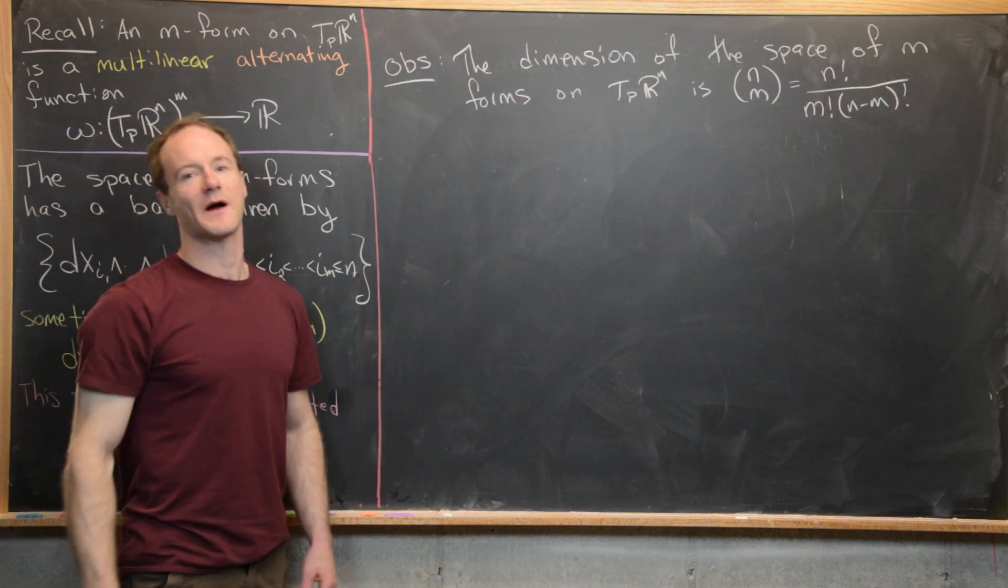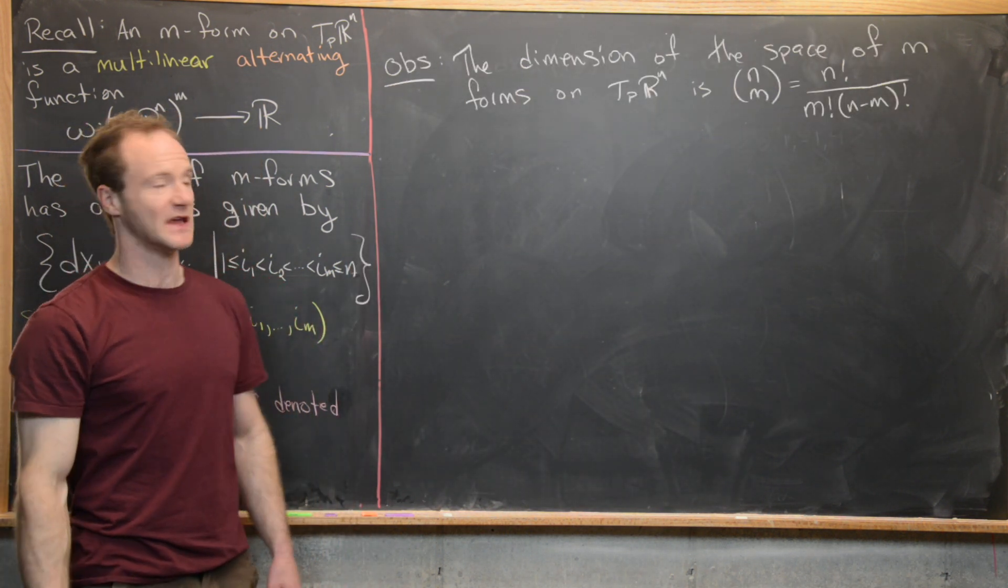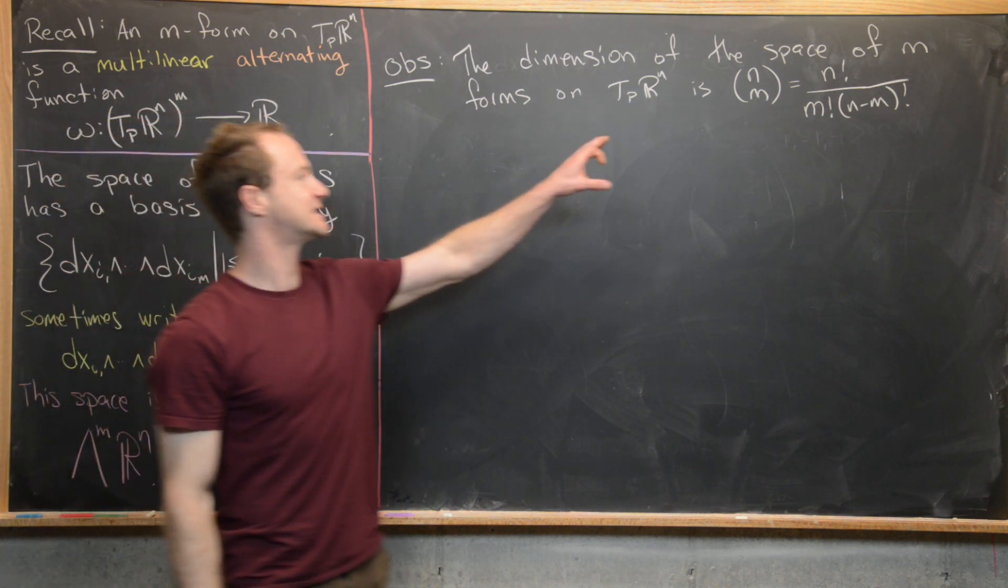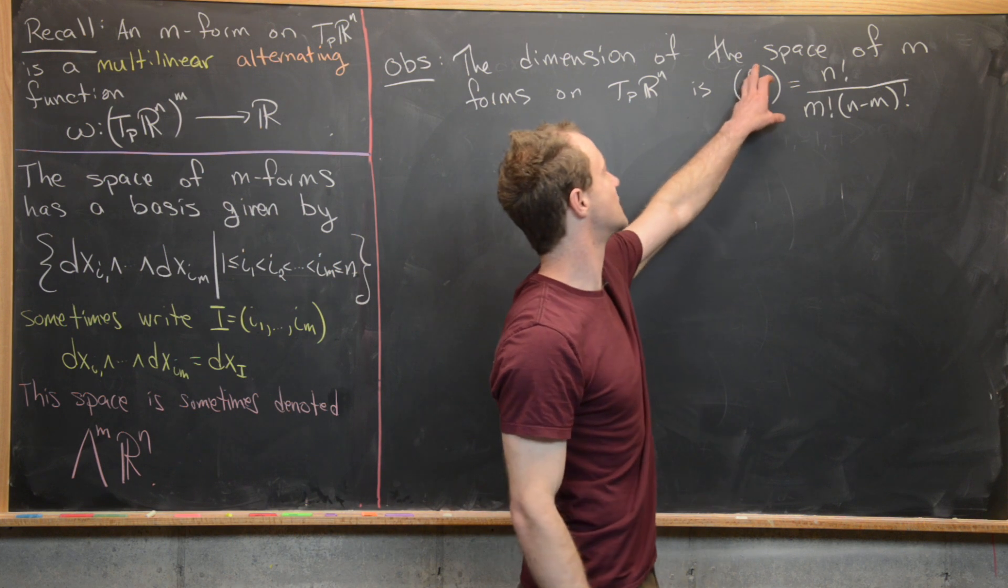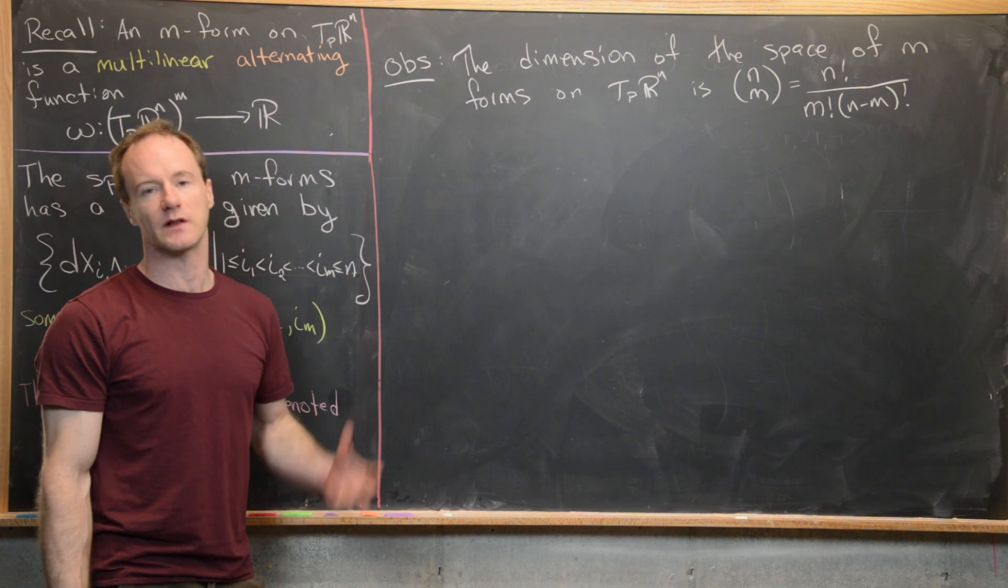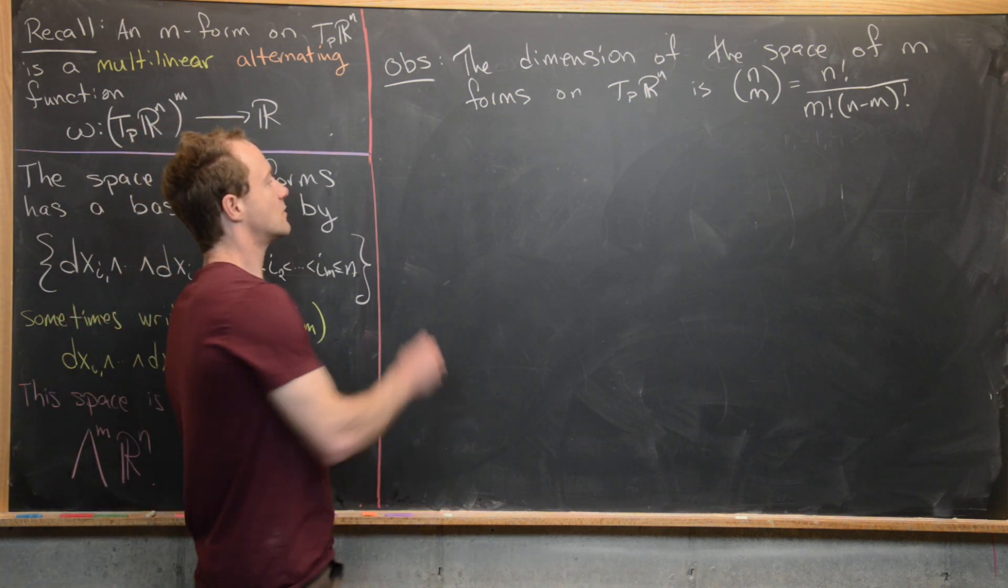The next thing that we want to do is talk about the dimension of the space of M forms on TPR^N. And in fact, it's pretty easy to see that it is this binomial coefficient N choose M, which in other words is N factorial over M factorial N minus M factorial.